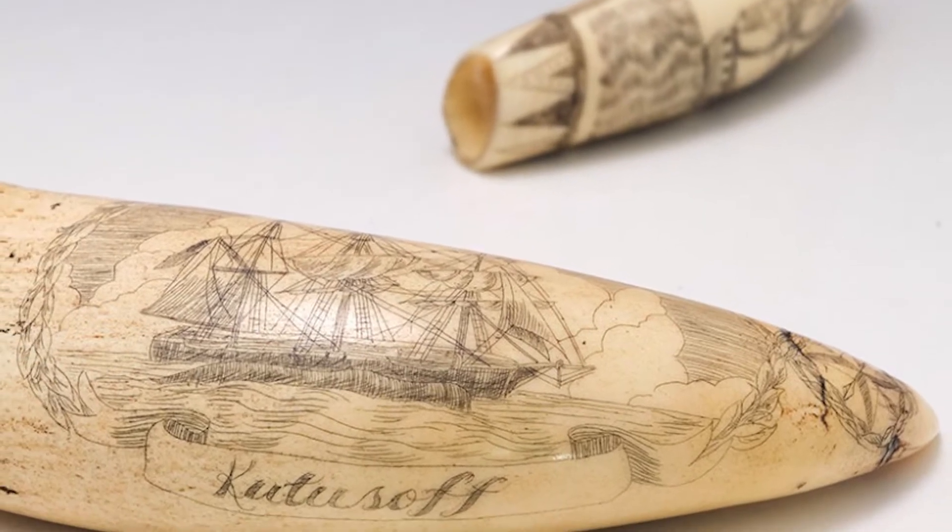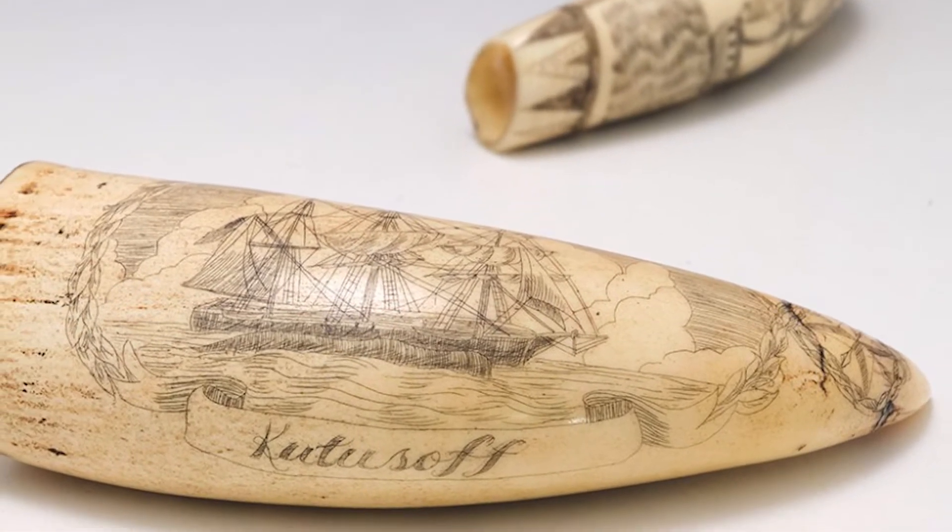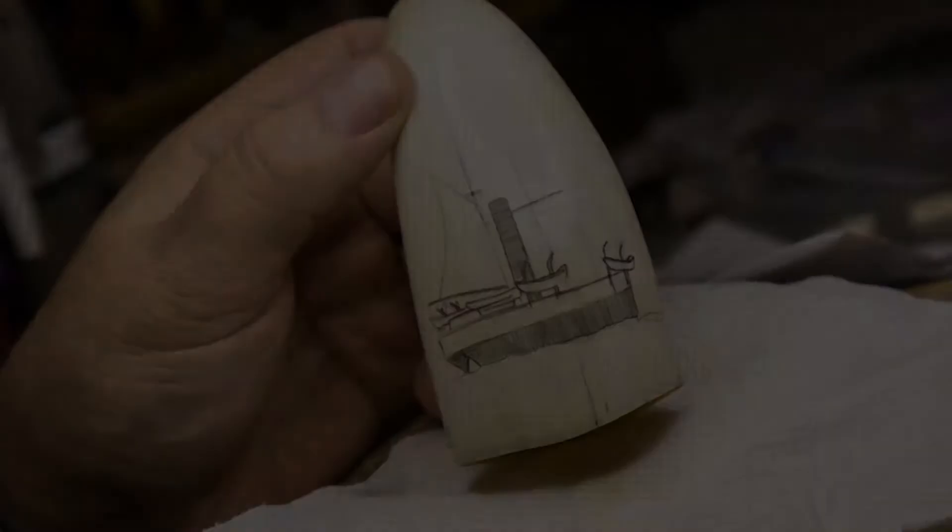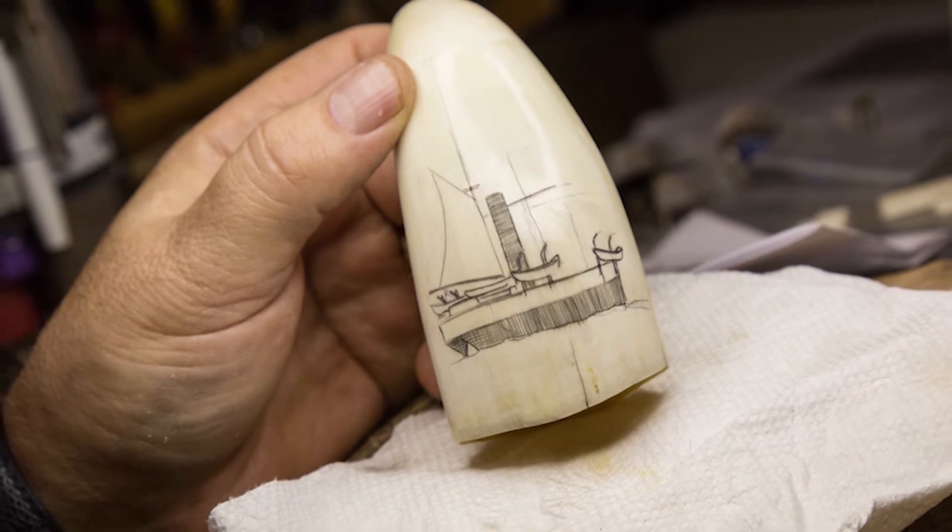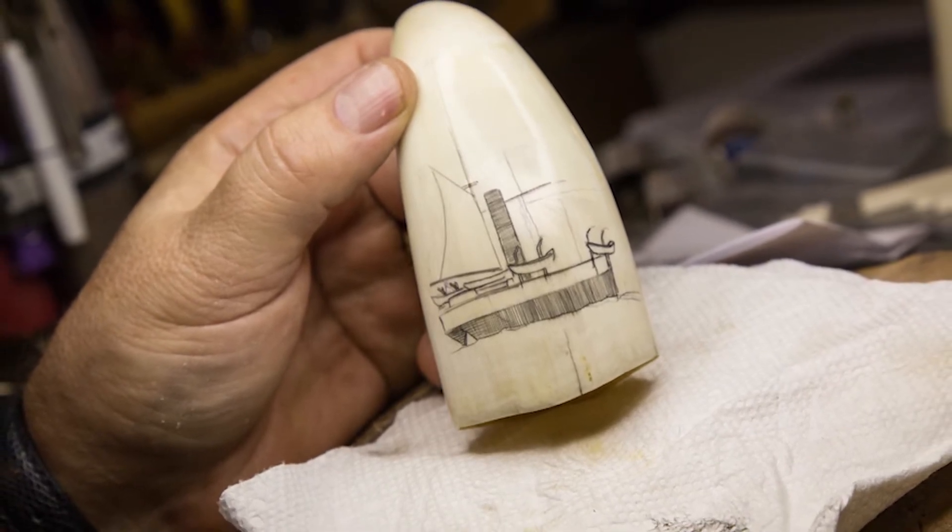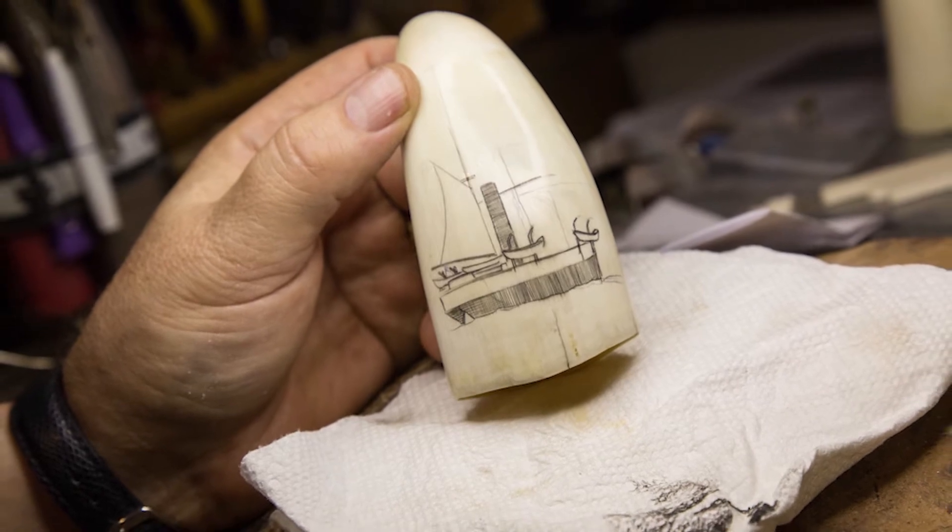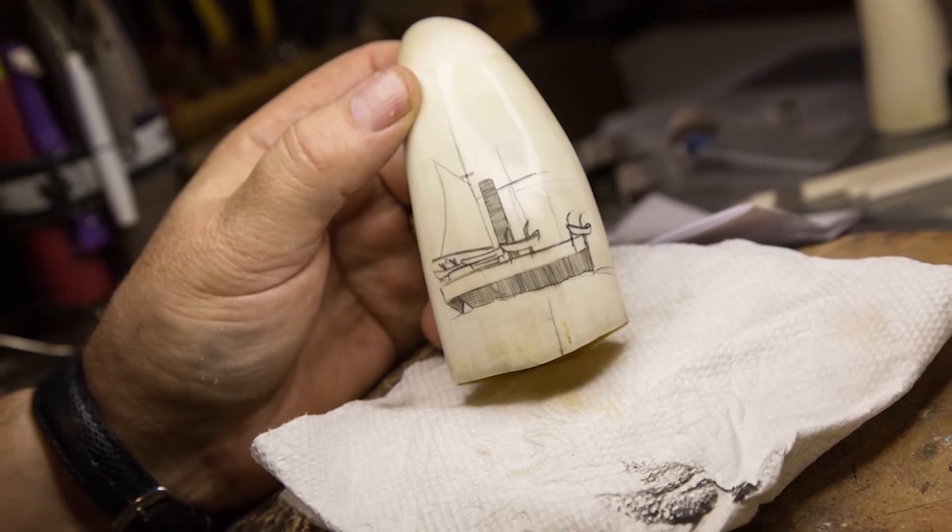The word scrimshaw is actually descended from a word meaning carving or engraving. Now the technique is the process of engraving or pricking a knife or some sort of sharp object into a softer object such as bone or ivory, even wood.